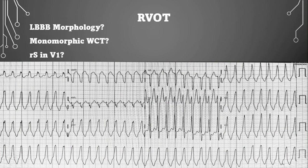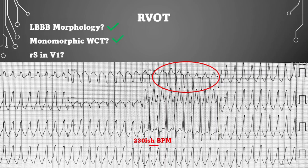Here are the criteria for right ventricular outflow tract tachycardia: left bundle branch morphology, monomorphic VTAC, and an RS in V1. Do we have a left bundle branch block morphology? Yes. Is it a monomorphic wide complex tachycardia? It looks the same throughout, with a rate around 230 beats per minute — checkmark. Do we see an RS in V1? Yes. Before someone says that deflection is a P-wave — it isn't. The max range for sinus tachycardia is 220 minus your age, and at 230 bpm it can't be sinus tachycardia. The P-wave-looking complex is followed by a small positive deflection — that's the R-wave — and the large negative complex is the S-wave. So yes, this is RVOT.